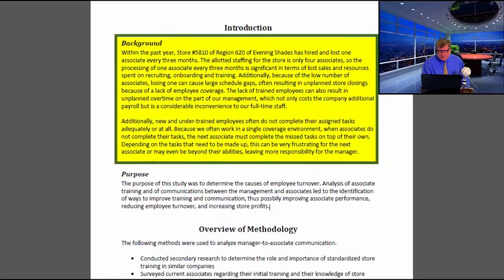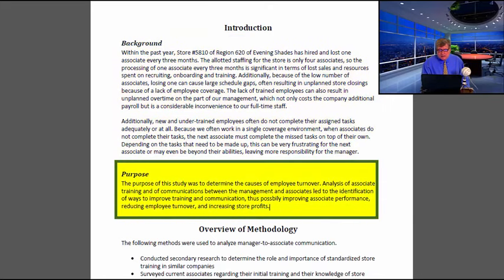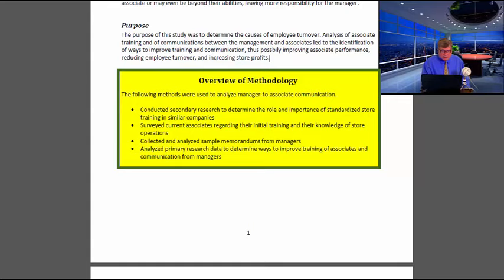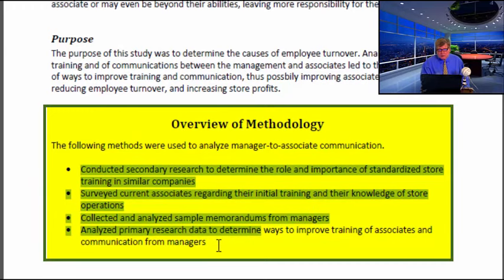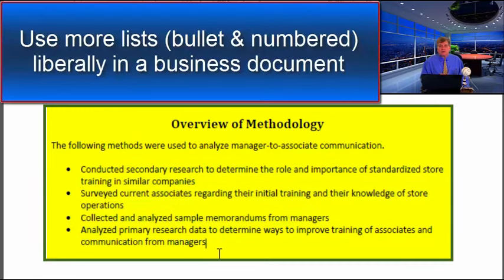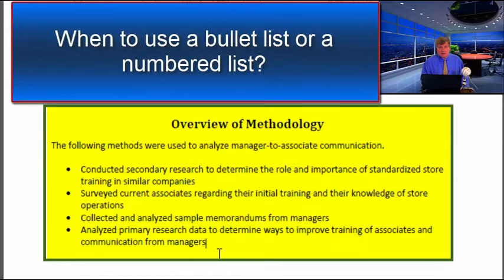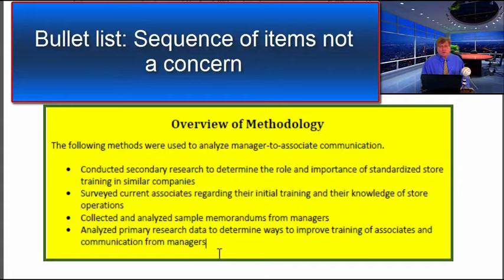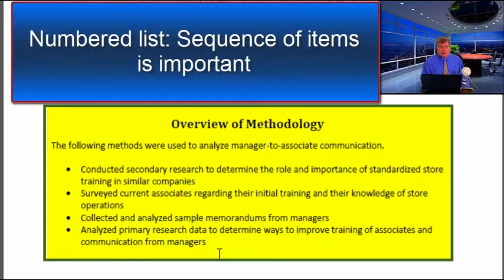There is the background, then the announcement of the purpose of the study. Both bullet lists and numbered lists are things you want to rely on more rather than less in a business report. Lists prevent the reader from having to decode long blocks of text and allow quick scanning. In a bullet list, sequence is not necessarily important; in a numbered list, the order matters — two comes after one, three comes after two.